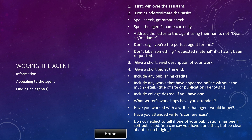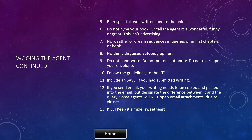Include any publishing credits. Include any works that have appeared online without too much detail — title of site or publication is enough. Include college degree if you have one. What writer's workshops have you attended? Have you worked with a writer that the agent would know? Have you attended a writer's conference? Do not neglect to tell if one of your publications has been self-published — you can say you have done that, but be clear about it. No fudging. Be respectful, well written, and to the point. Do not hype your book or tell the agent it is wonderful, funny, or great. This isn't advertising.